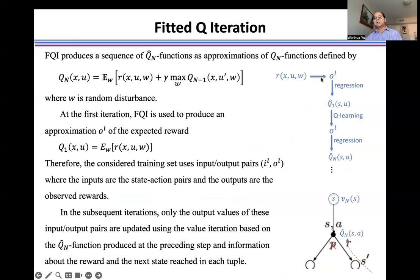We use this R, and then we generate the first O, distribution of the O. From this O, this output, we can use the regression method to generate the first Q value. That is the approximation of the true Q value.